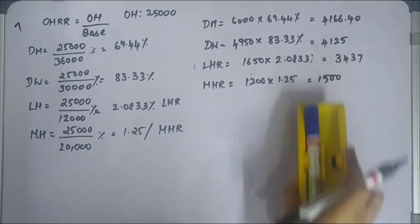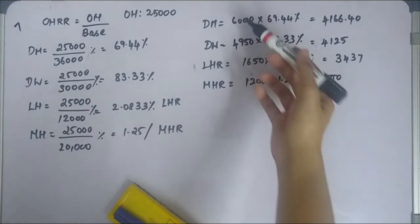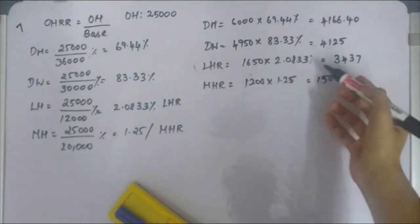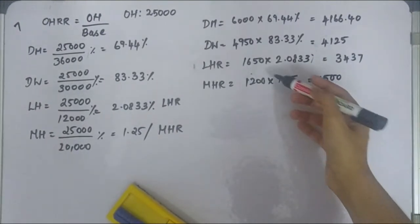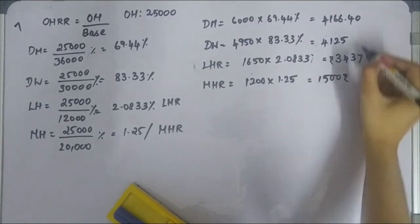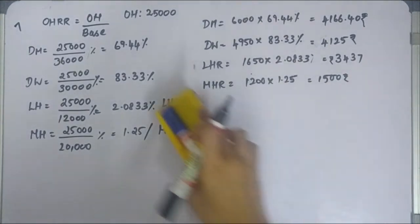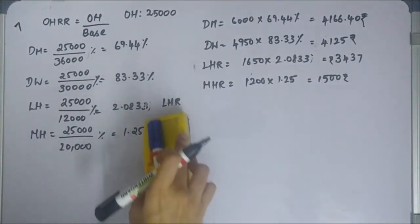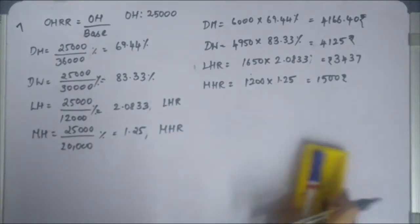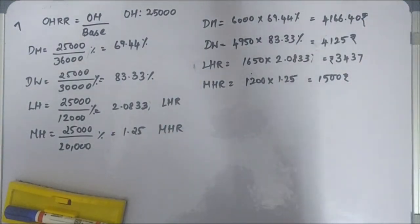One point to note: when using rates expressed as percentages — such as direct material and direct wages methods — we multiply the job cost by the percentage rate. For methods expressed in rupees per hour, we multiply directly. That completes Illustration number 7.